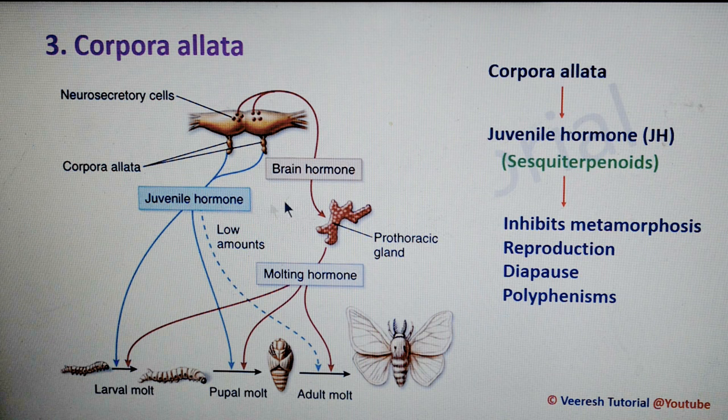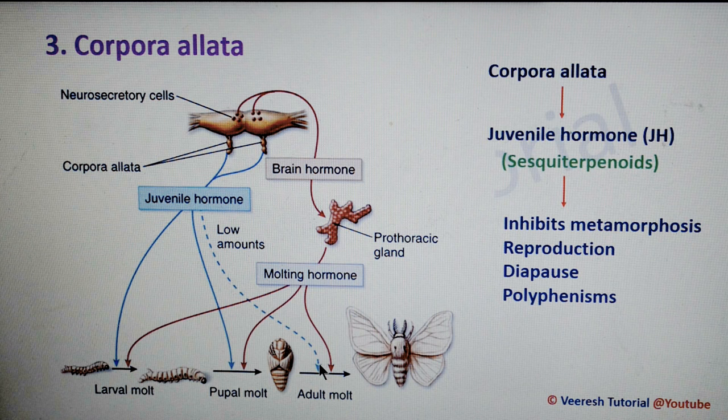In the presence of high titer of juvenile hormone, a larva molts into a larva. At a low titer of juvenile hormone, it molts into a pupa. And in the absence of juvenile hormone, a pupa molts into an adult.